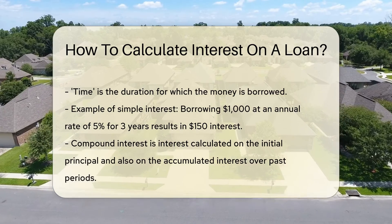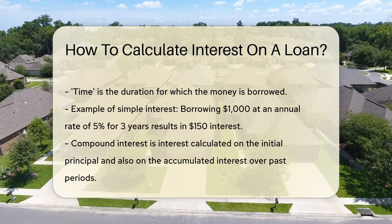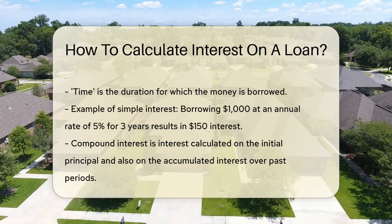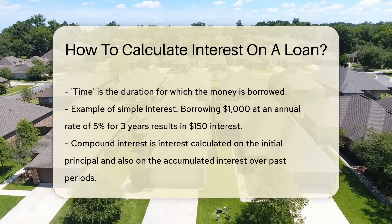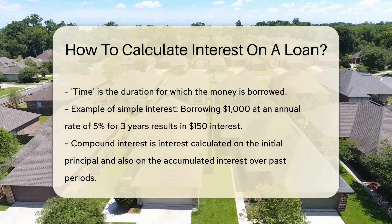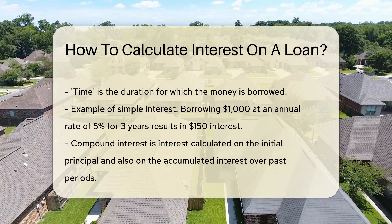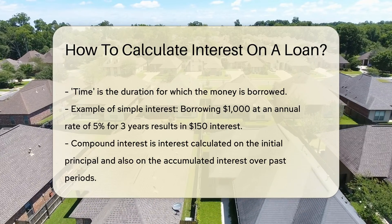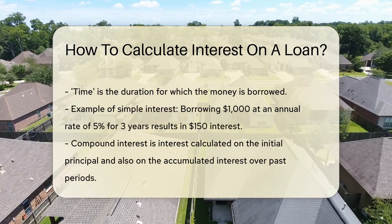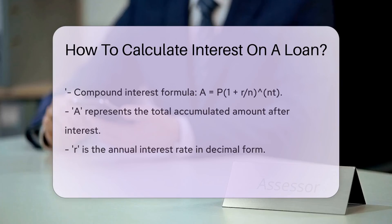Let's say you borrow $1,000 at an annual rate of 5% for 3 years. Using our formula, you'd pay $150 in interest — that's $1,000 × 0.05 × 3. Easy as pie.